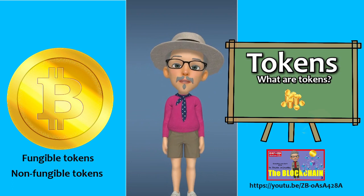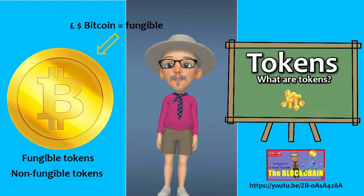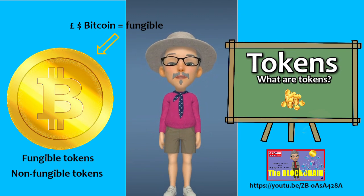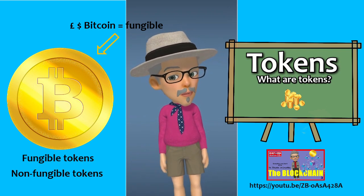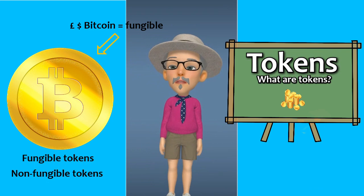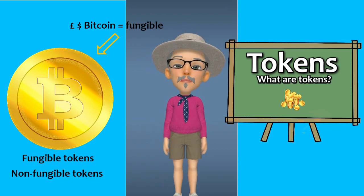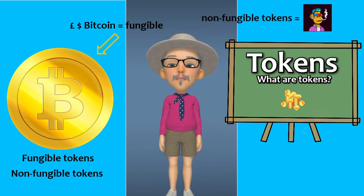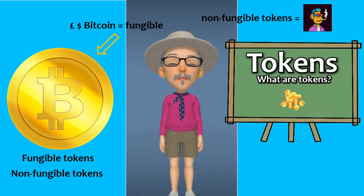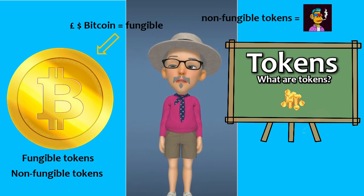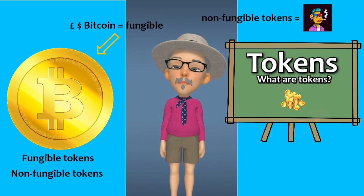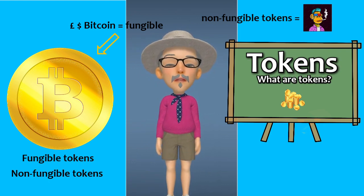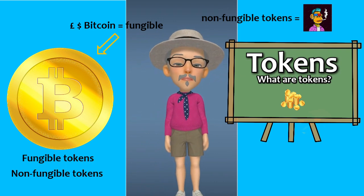Fungible tokens are typically created to be used as cryptocurrencies — for example, Bitcoin, Ether, Matic, etc. Those are all cryptocurrencies, digital assets. Non-fungible tokens are typically created to identify and register digital assets on the blockchain, such as artwork, music, videos, contracts — lots of things. Fungible tokens are divisible and non-unique, while non-fungible tokens are unique with unique attributes.